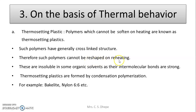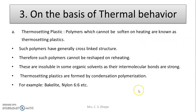These polymers cannot be reshaped and reused like thermosoftening plastics, where you can make it soft and give it any desired shape. Thermosetting polymers cannot be reclaimed from their waste, whereas thermosoftening plastics can be reclaimed and reused. They are insoluble in organic solvents such as alcohols or acetone because they have strong bonds. There is a three-side linkage present — cross-link structure means the monomer has three side linkages, forming a cross-link or network-like structure.